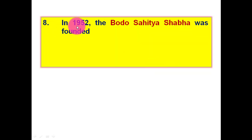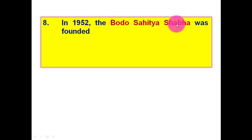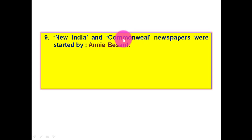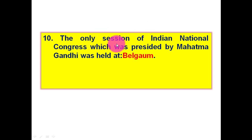Next, the Bodo Sahitya Sabha was founded in 1952. Next, the newspapers New India and Commonwealth were started by Annie Besant.